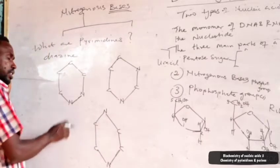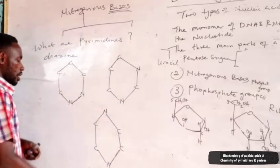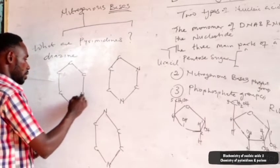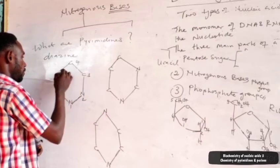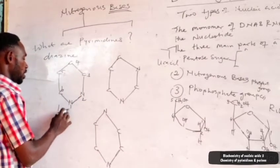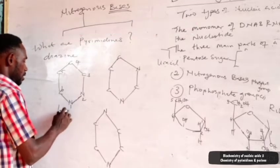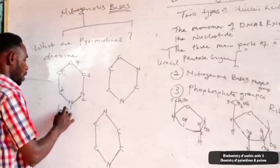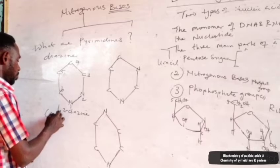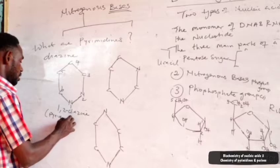Just like we know in organic chemistry, this is analogous to ortho, meta, and para positions. When the first nitrogen is at position one and the next nitrogen is at position two, that is the 1,2 position — we call it pyridazine. So the 1,2 diazine is called pyridazine.